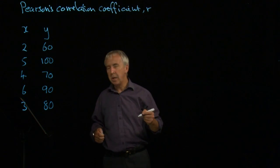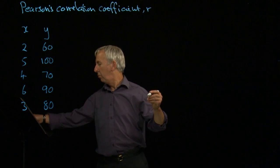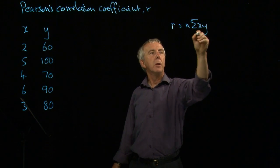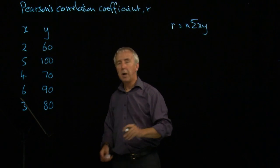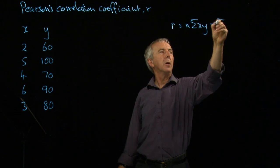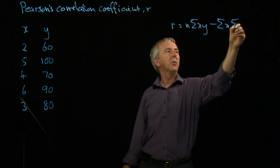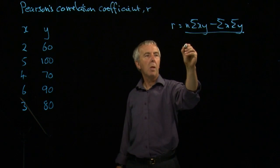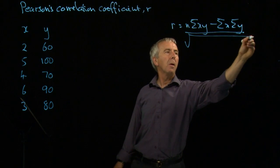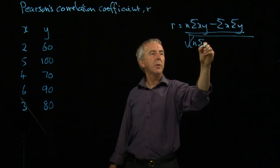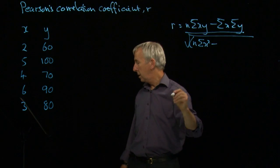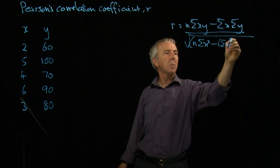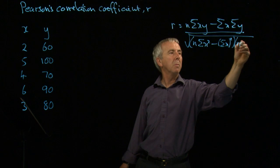This has a rather nasty formula, which I'll write out here. R equals n times the sum of each product xy, take away the sum of x times the sum of y, divided by the square root of n times the sum of x squared minus the sum of x squared, and then the same for y.